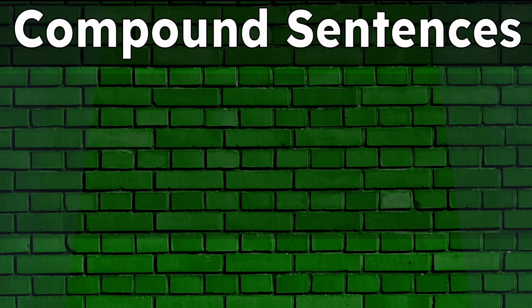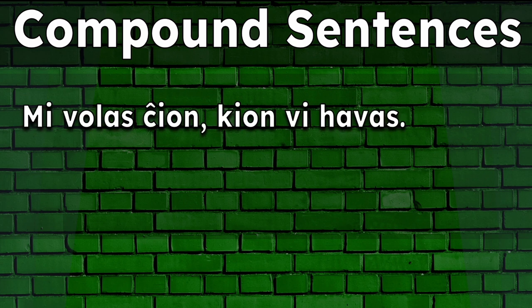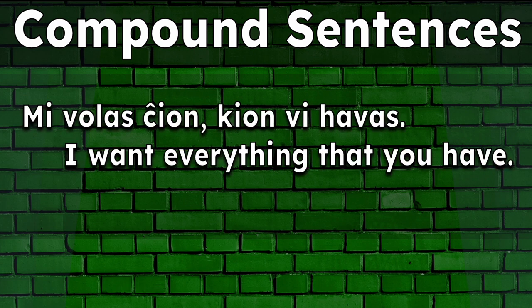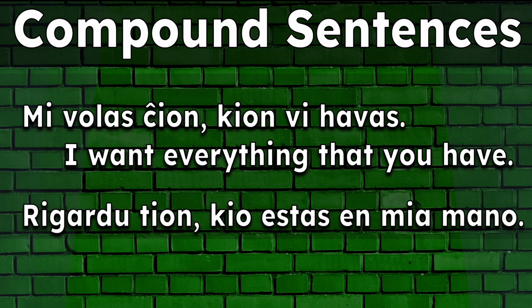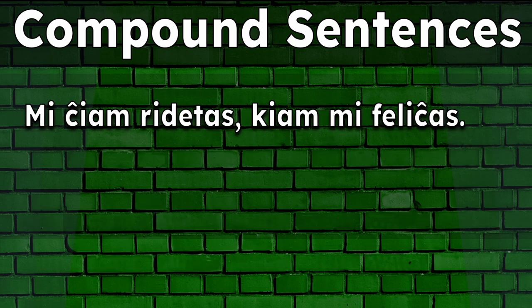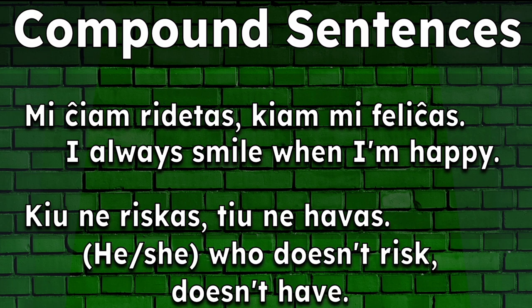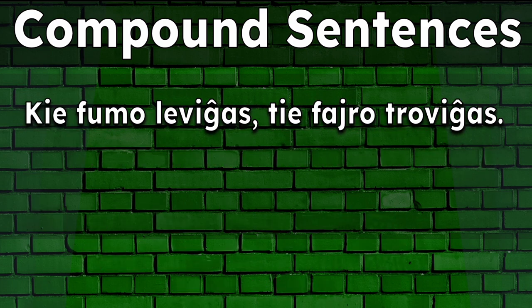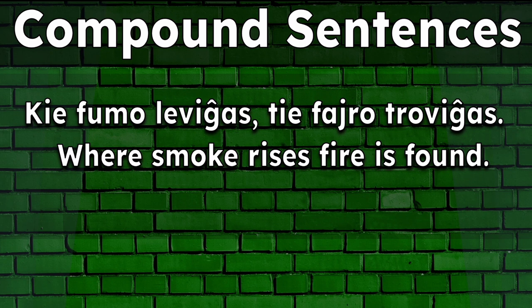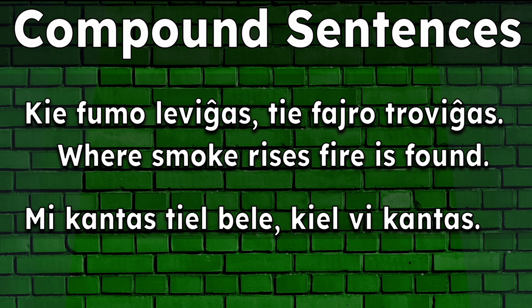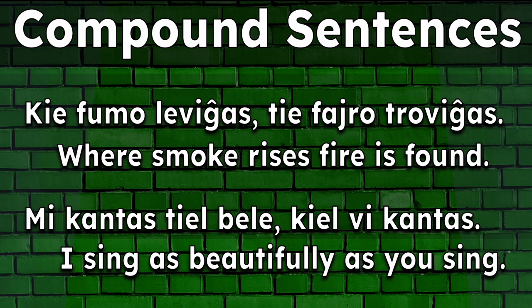Multiple correlatives can also be used to create compound sentences. Mi volas ĉion kion vi havas. I want everything that you have. Rigardu tion kio estas en mia mano. Look at what's in my hand. Mi ĉiam ridetas kiam mi feliĉas. I always smile when I'm happy. Kiu ne riskas, tiu ne havas. He or she who doesn't risk, doesn't have. Kie fumo leviĝas, tie fajro troviĝas — where smoke rises, fire is found — in other words, where there's smoke, there's fire. Mi kantas tiel bele, kiel vi kantas. I sing as beautifully as you sing.